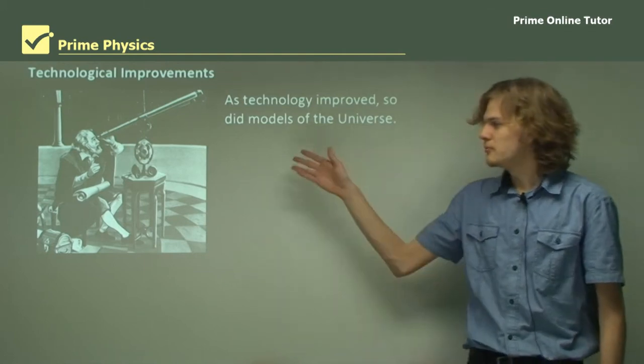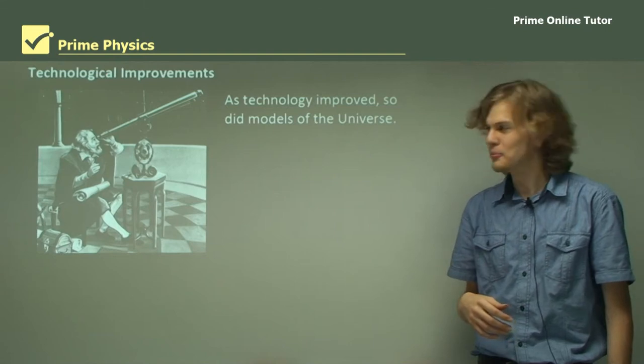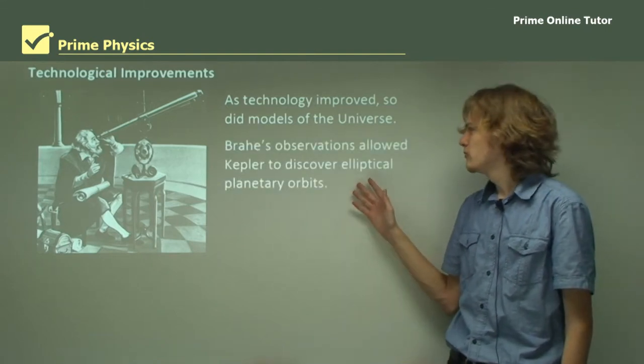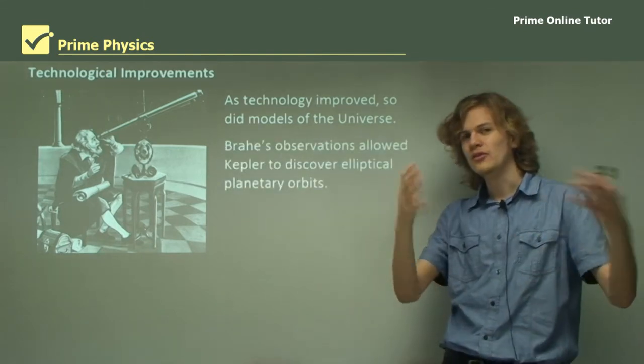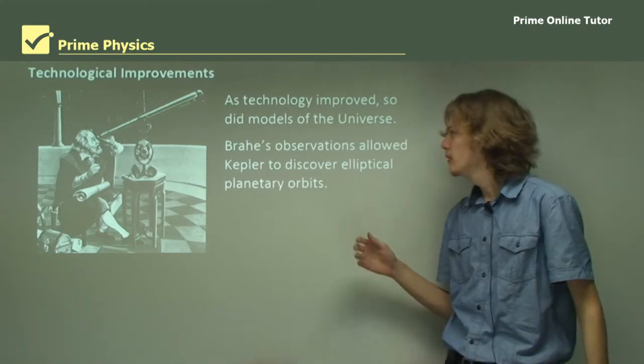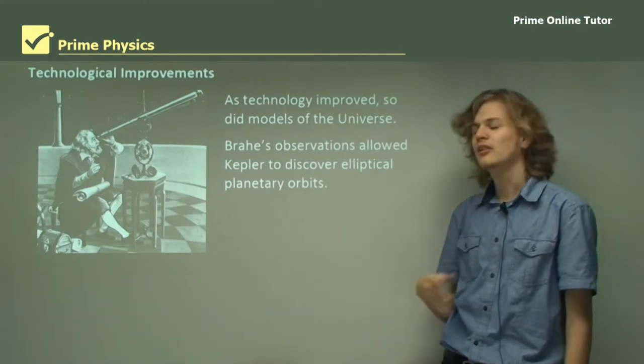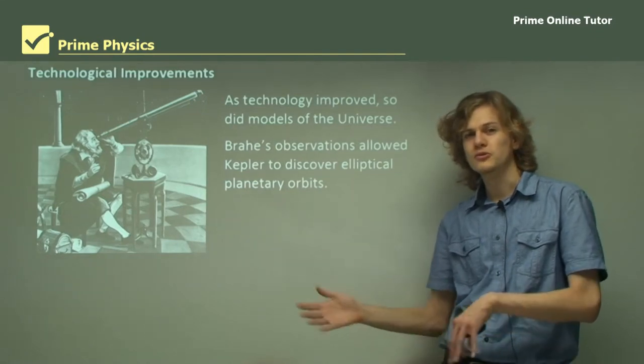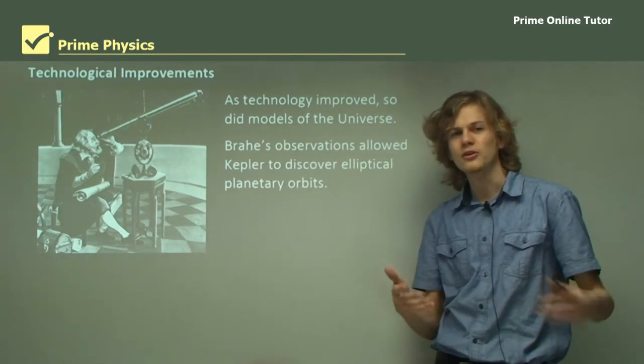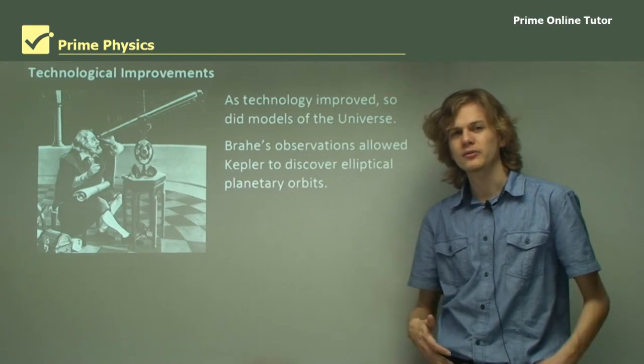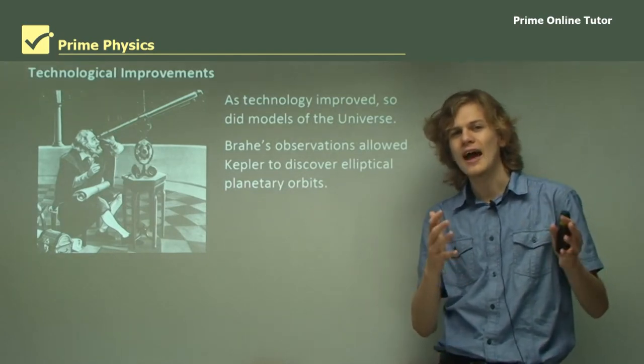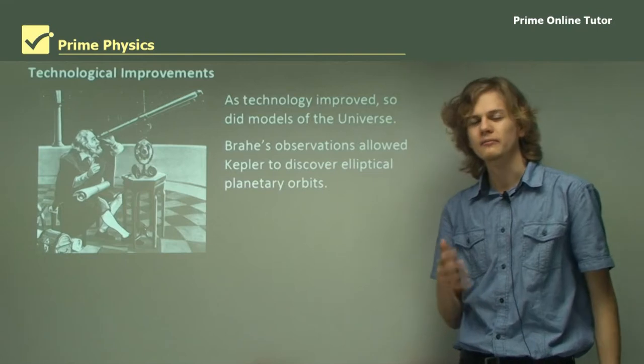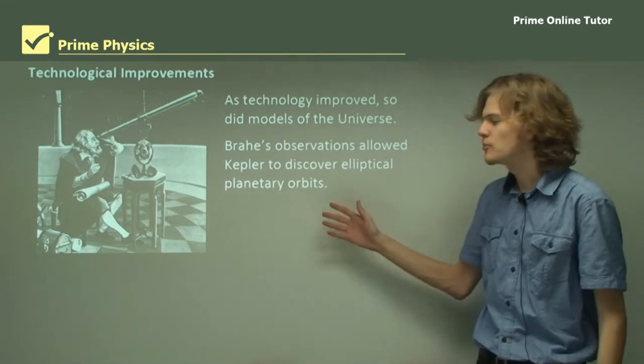We can see here an illustration of Galileo Galilei looking through a telescope. Brahe's observations, made at the various different observatories that he built, allowed Kepler to discover elliptical planetary orbits. This was done with equipment that was state-of-the-art at the late 16th and early 17th century, giving very accurate and numerous measurements that Kepler used to make his observations.